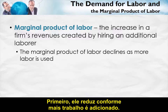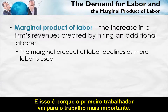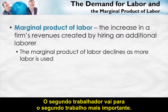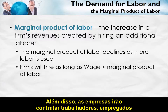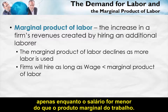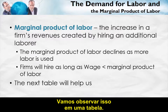First, the marginal product of labor declines as more labor is added. This is because the first laborer goes to the most important task, the second laborer goes to the second most important task, and so forth. Moreover, firms will hire workers as long as the wage is less than the marginal product of labor. Let's take a look at this in a table.